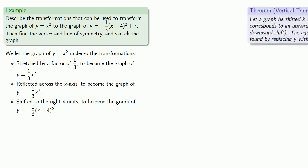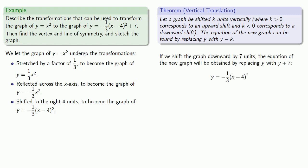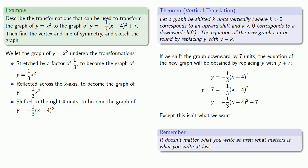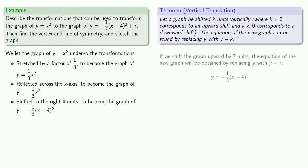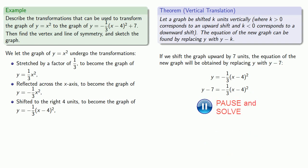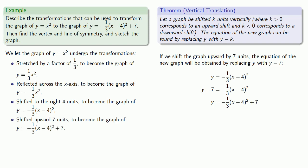Finally, we have a vertical translation. If we shift the graph upward by 7 units, the equation of the new graph will be obtained by replacing y with y minus 7. Solving for y gives us exactly the equation we want. So we've shifted upward by 7 units to become the graph of y equals minus one-third times x minus 4 squared plus 7.